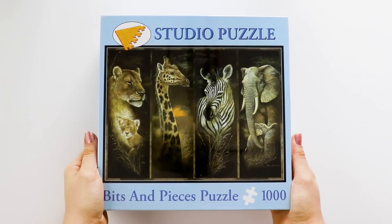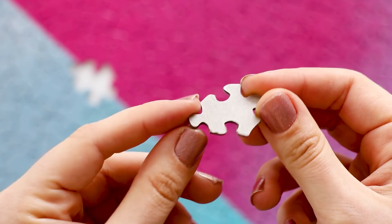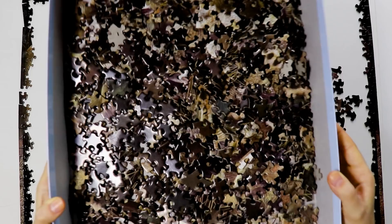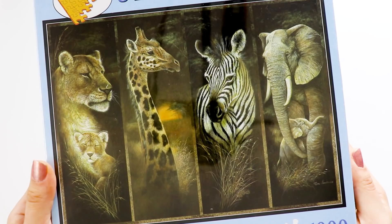You'll want to start with a puzzle you're okay painting over. I'm using this one that I was sent by Bits and Pieces, but you could always find one at a thrift store or somewhere in the back of a closet.